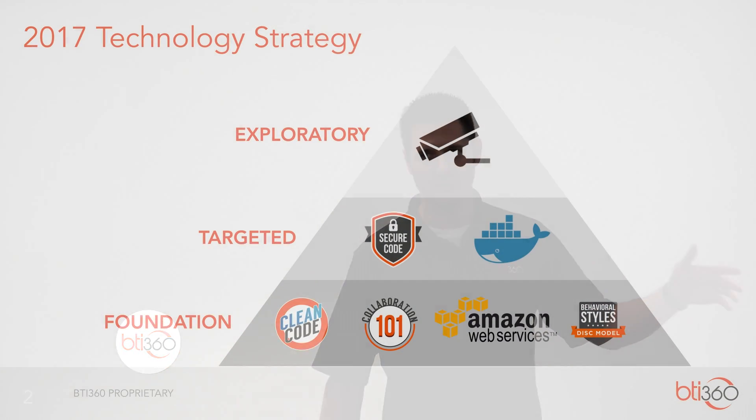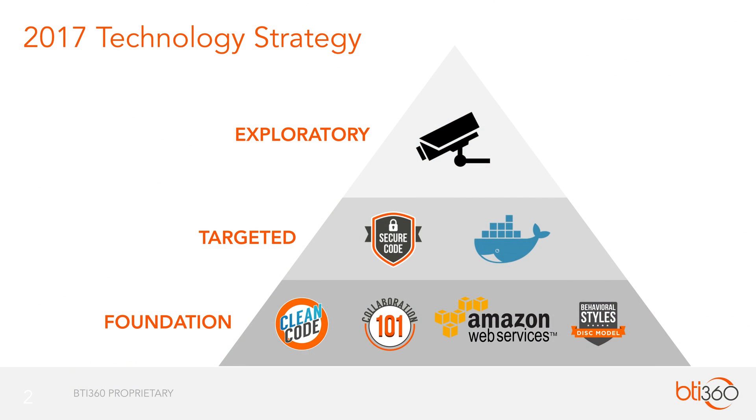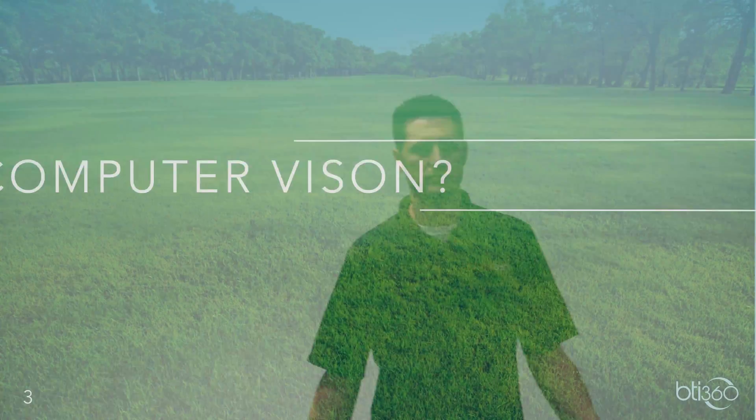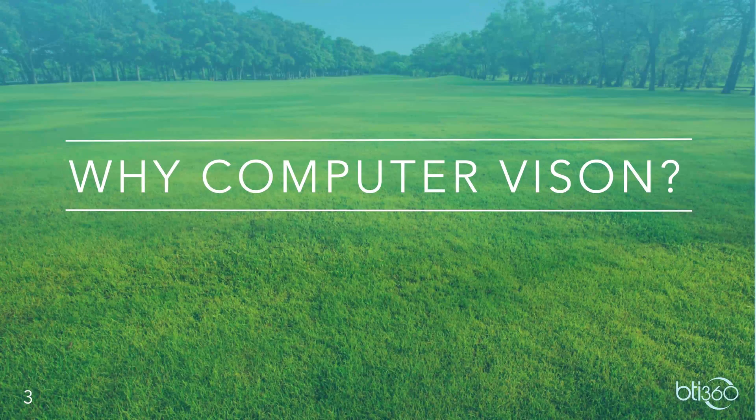Here's our 2017 technology strategy pyramid that we're all familiar with. Throughout the year we've talked about the foundational and targeted technologies, but today we're going to focus on our exploratory category — specifically computer vision. We're going to talk about why computer vision, what our goal is, and how we're going to get there.